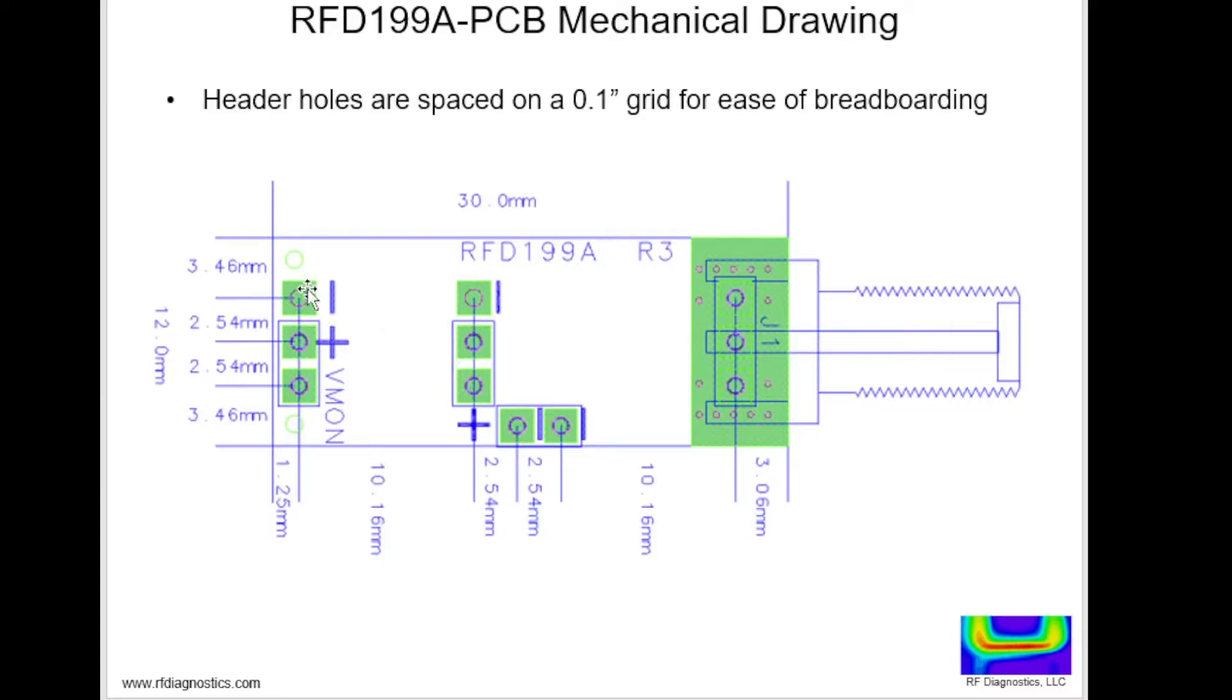You could add DC headers on these pins and stick it into your breadboard. We recommend an SMA for higher frequencies, but you could breadboard it on your breadboard at lower frequencies, say under 500 megahertz.